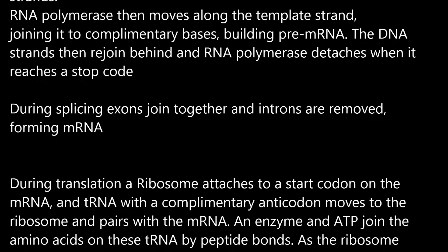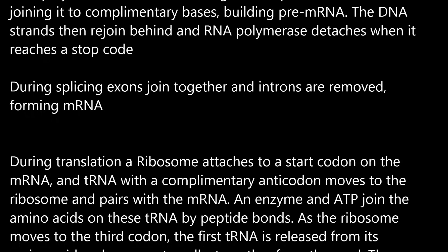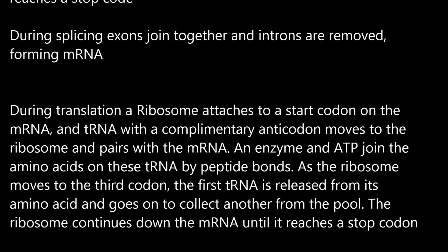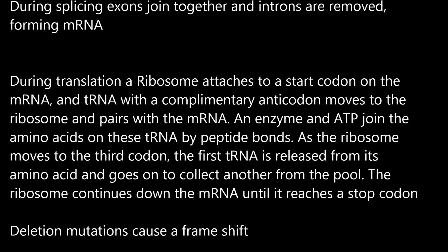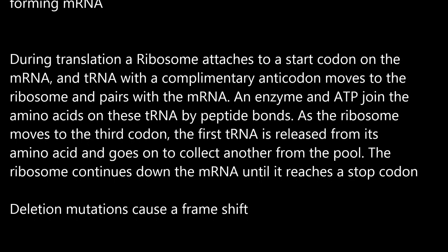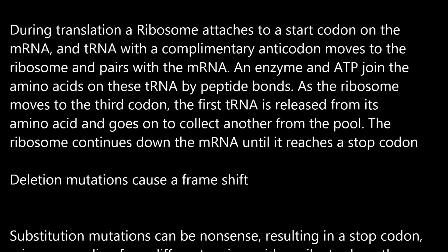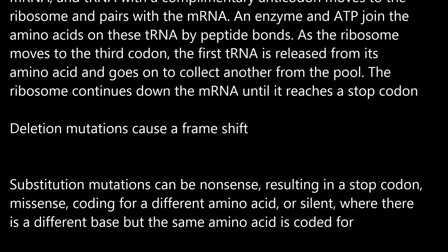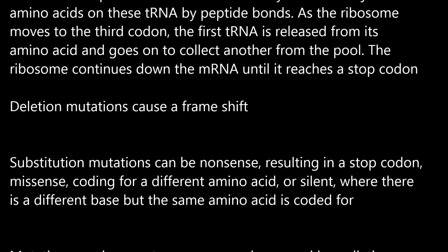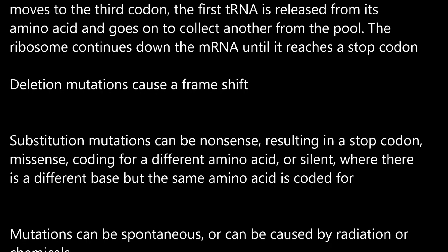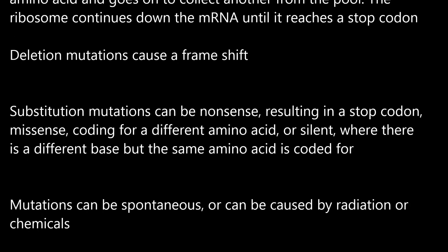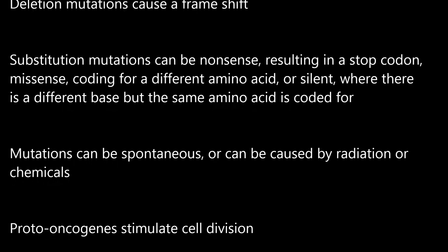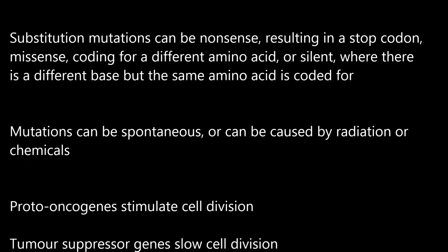During splicing, exons join together and introns are removed, forming mRNA. During translation, a ribosome attaches to a start codon on the mRNA, and tRNA with a complementary anticodon moves to the ribosome and pairs with the mRNA. An enzyme and ATP join the amino acids on these tRNA molecules with peptide bonds. As the ribosome moves to the next codon, the first tRNA is released from its amino acid and goes to collect another from the pool. The ribosome continues down the mRNA until it reaches a stop codon. Deletion mutations cause a frameshift. Substitution mutations can be nonsense, resulting in a stop codon; missense, coding for a different amino acid; or silent, where a different base codes for the same amino acid.